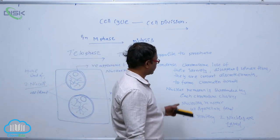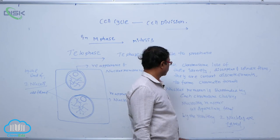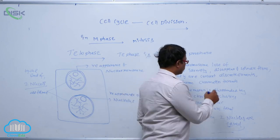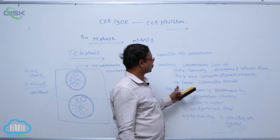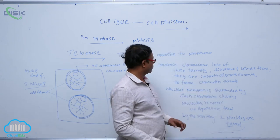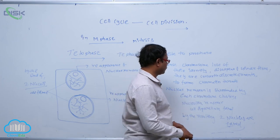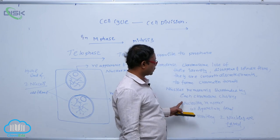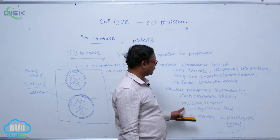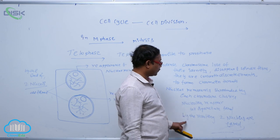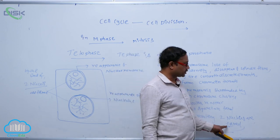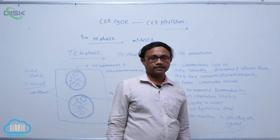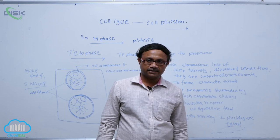Condensed chromosomes lose their identity and spindle fibers disappear. They are converted to discrete elements to form chromatin threads. Nuclear membrane surrounds each chromosome cluster, nucleolus reappears, and cell organelles are formed. As a result, two nuclei are formed from a single nucleus — this process is known as karyokinesis.